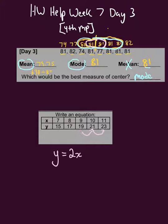So the first thing I have to do is multiply the x values by 2. So we'll start here with the 7 - 7 times 2 is 14, 8 times 2 is 16, 9 times 2 is 18, 10 times 2 is 20, and 11 times 2 is 22.